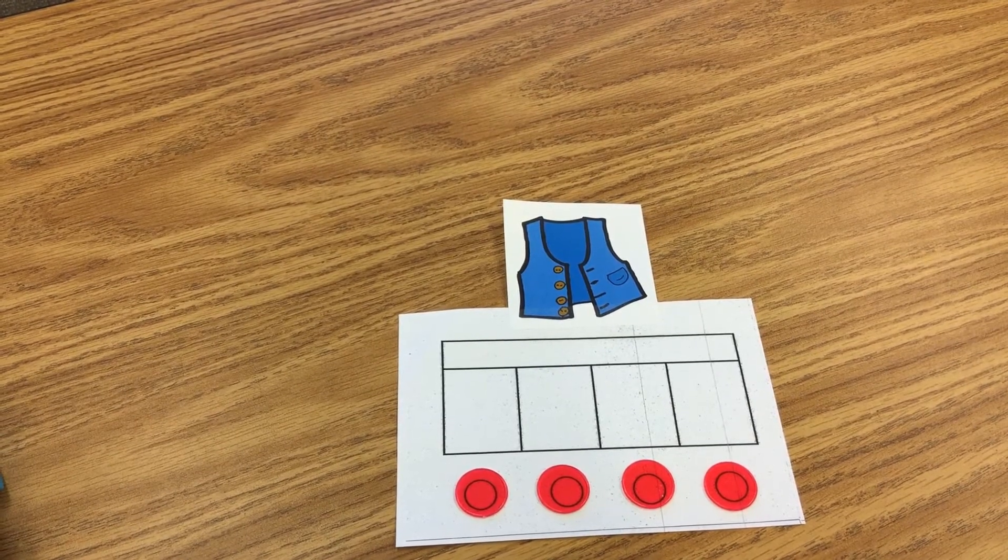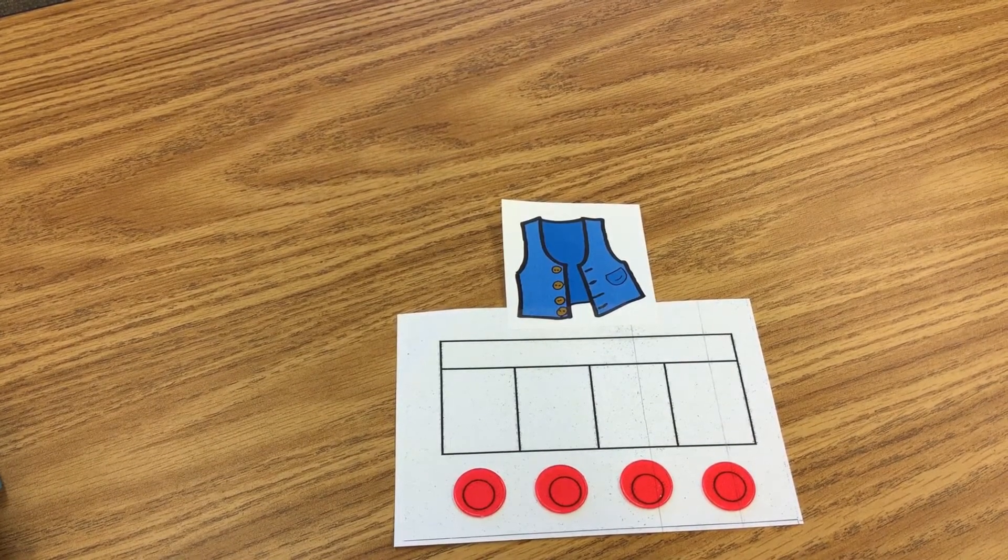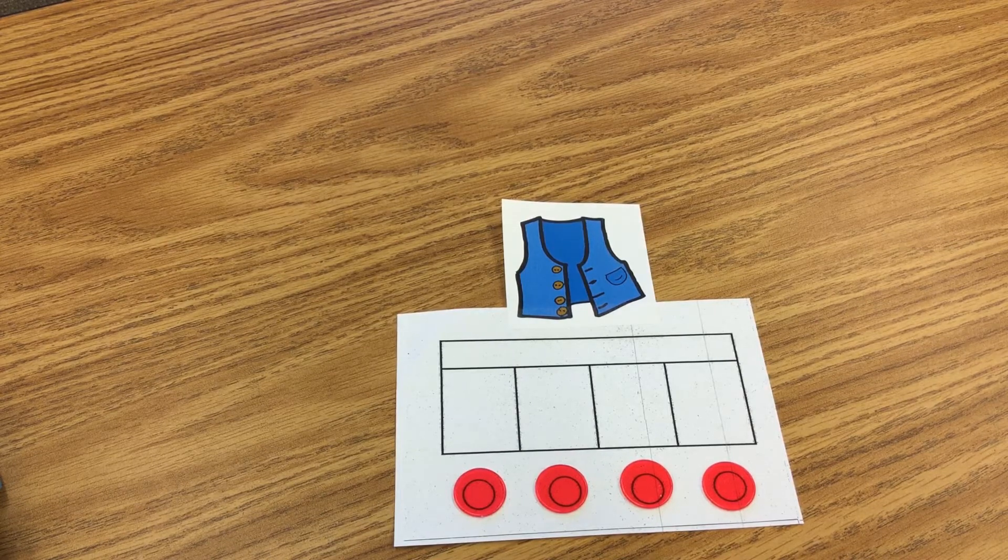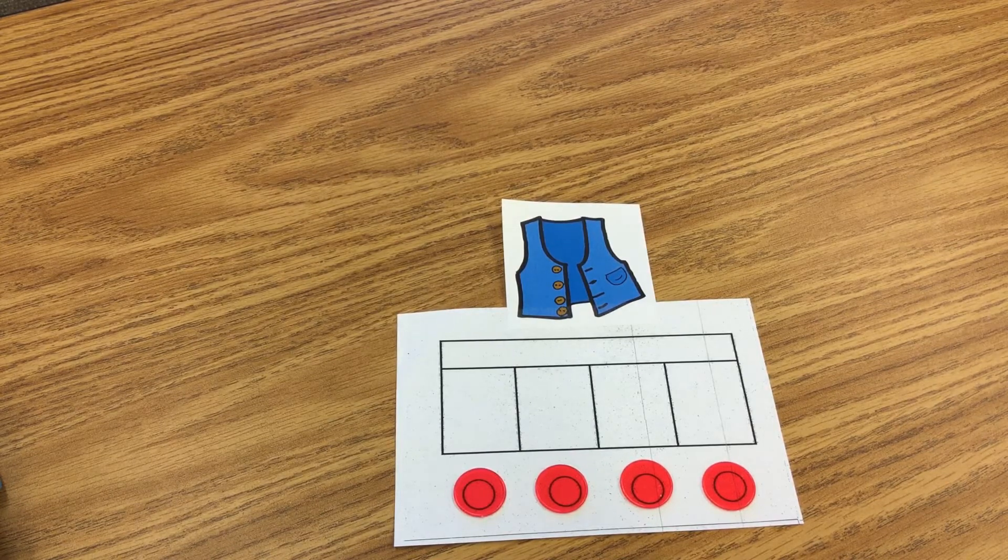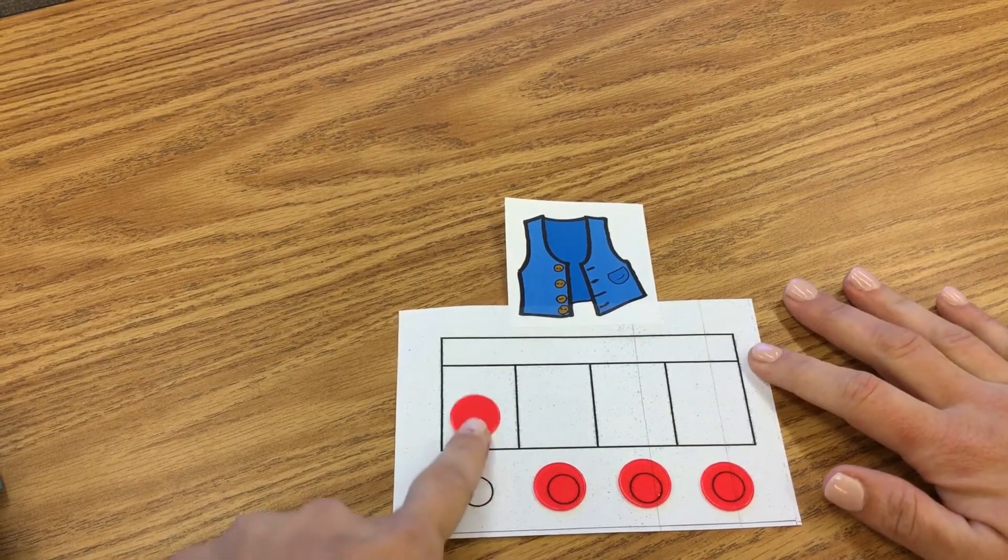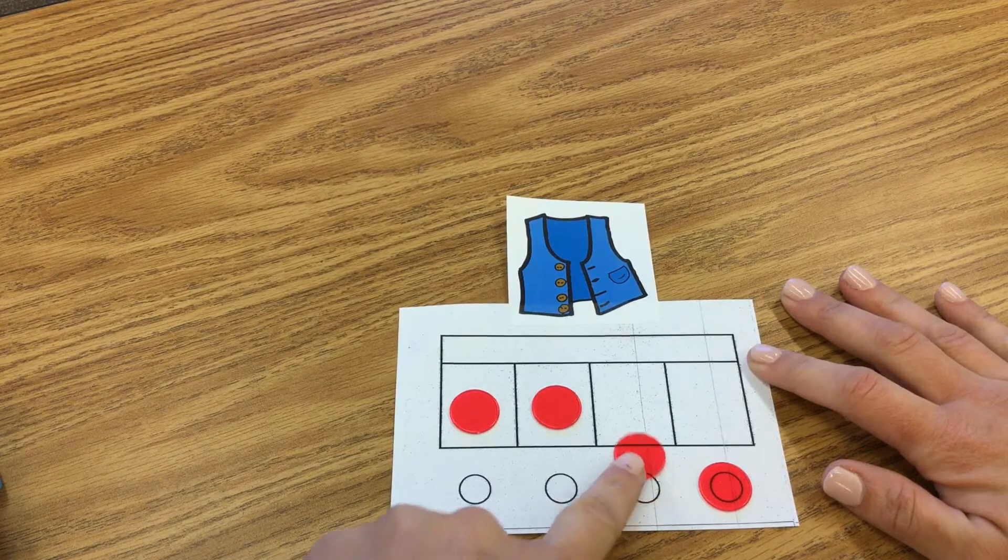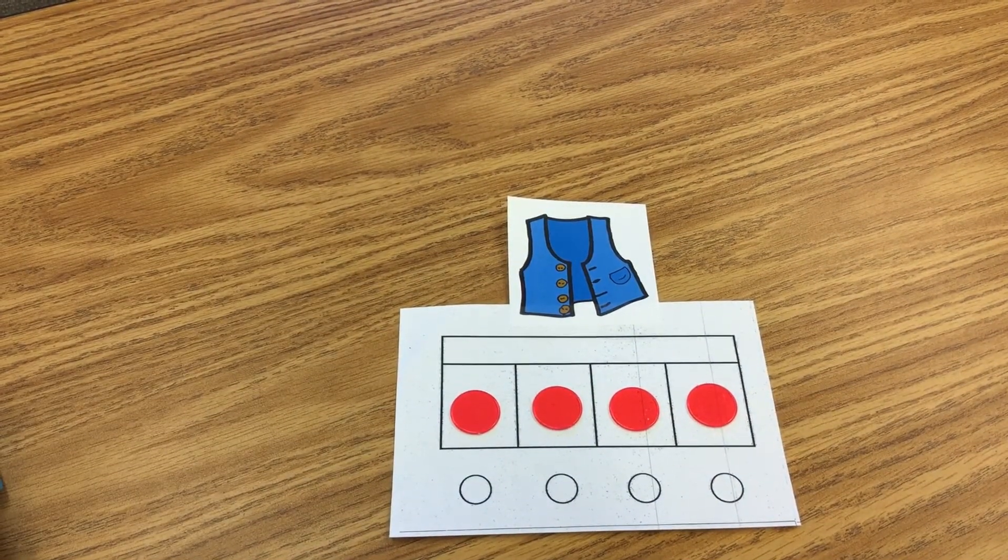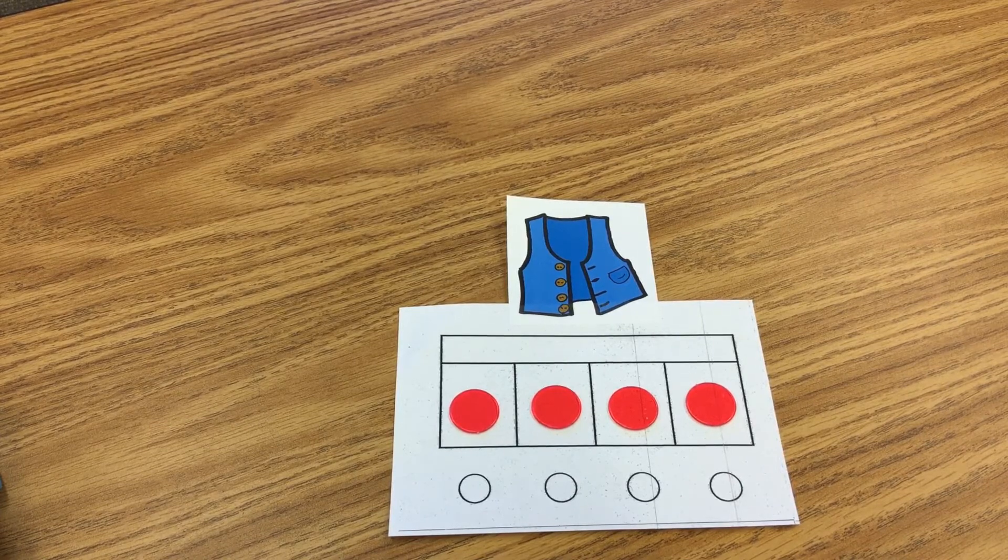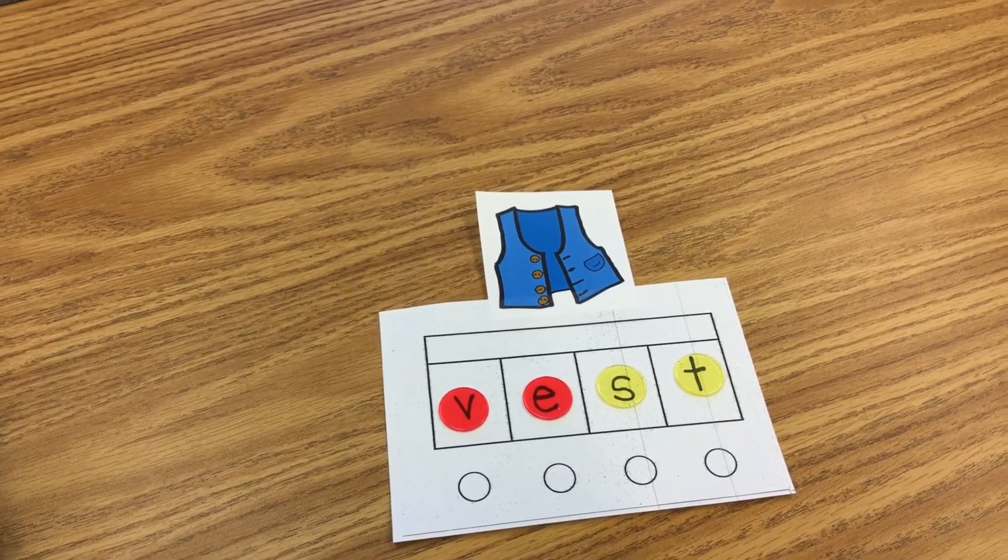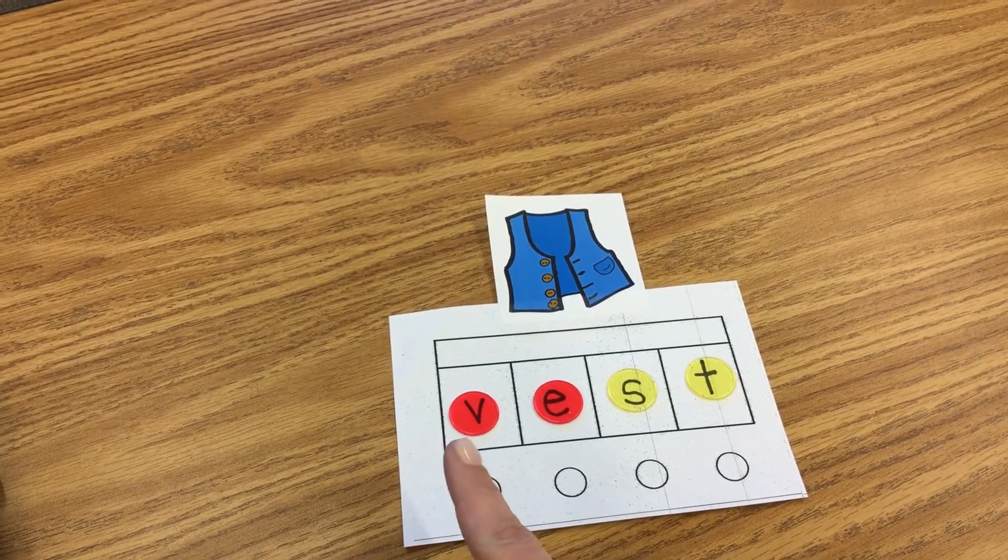What is this a picture of? It's a vest. Say vest. Good. Now let's push up the sounds. V, e, s, t. Where did you hear the st? Beginning or end? Great work. The st sound is at the end of the word vest.